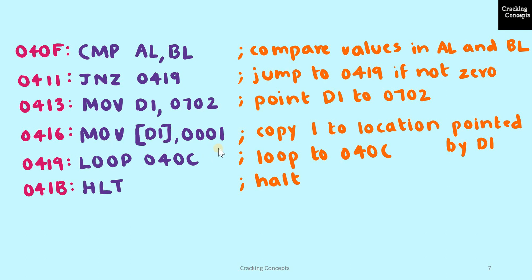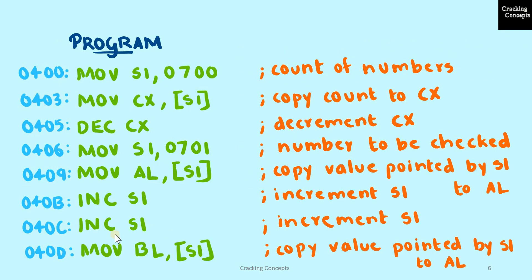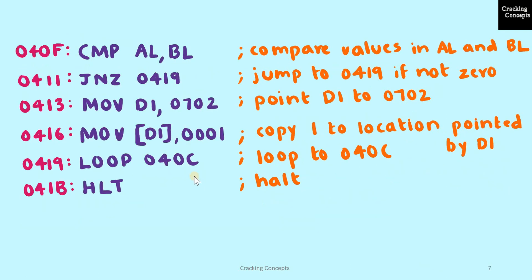This is a 3-byte instruction. Then we copy the value 1 to the location pointed by DI — a 3-byte instruction. When that is done, a loop is performed back to location 040C, and this will be repeated until the value of CX is non-zero. When it becomes 0, the program is halted — a 2-byte instruction. Now we look into how this program will be executed using an 8086 trainer kit.